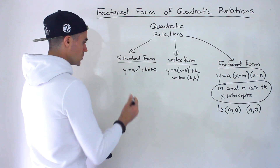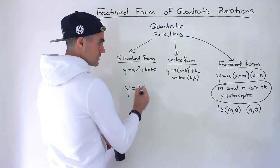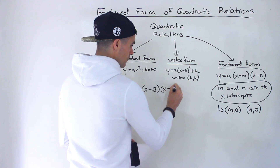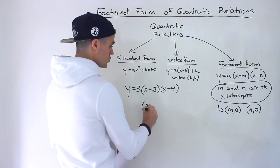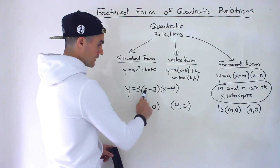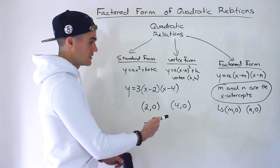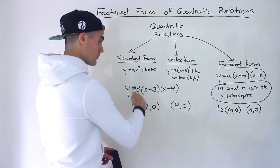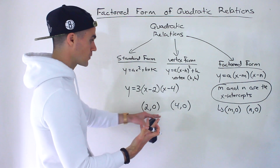For example, if we bring in actual values — let's say we're working with three for the a value, and then x minus two times x minus four — we have a very simple parabola. The x-intercepts are going to be (2, 0) and (4, 0). If we plug in two, we get three times zero times negative two, which gives y equals zero. If we plug in four, we get three times two times zero, which also gives y equals zero. That's what's nice about factored form — we get the intercepts right away.